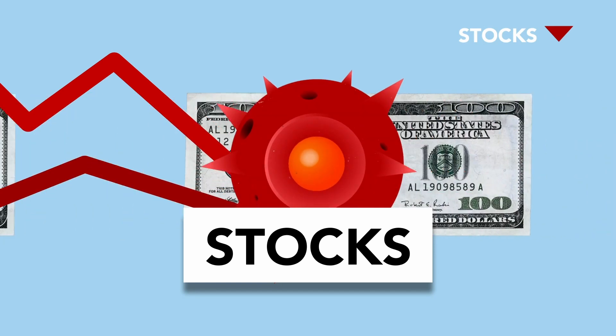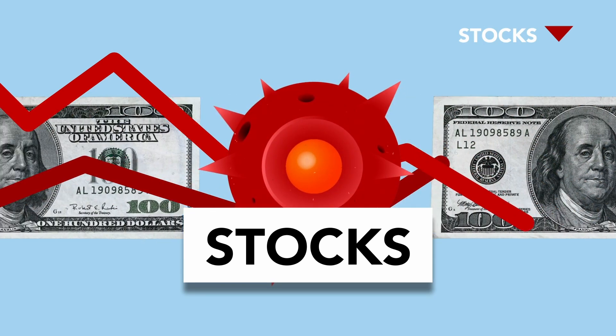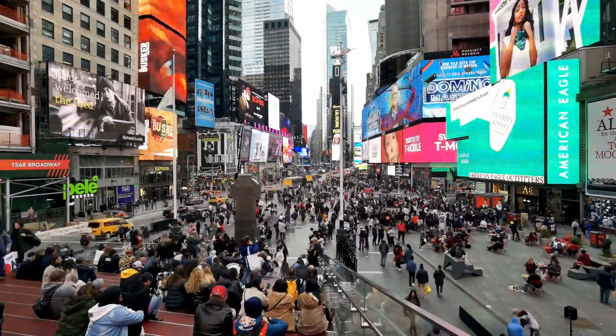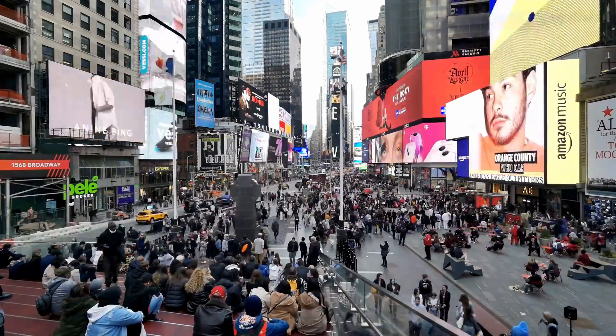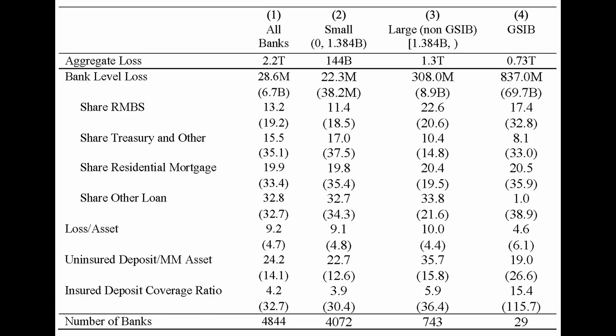Amit stresses that the key issue is whether depositors are actively paying attention to the health of the bank and willing to withdraw their funds quickly. The issue becomes more critical when a large proportion of deposits are uninsured and therefore more likely to be withdrawn swiftly in case of any perceived risk. Amit's paper analyzes the potential impact of recent increases in interest rates on the financial stability of U.S. banks, revealing that the mark-to-market value of bank assets is $2 trillion less than their book value, resulting in an average decrease of 10% across all banks. The worst-hit banks in the bottom 5th percentile experienced a 20% drop. The paper highlights that uninsured leverage — uninsured debt to assets — is a crucial factor in determining whether the decreased asset values could lead to insolvency.